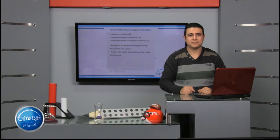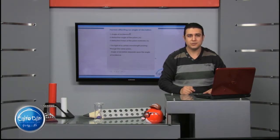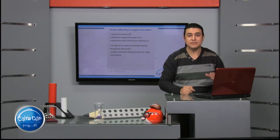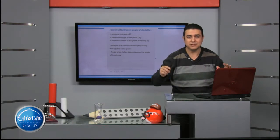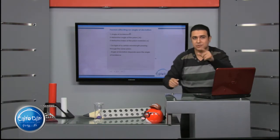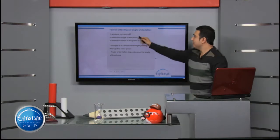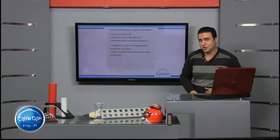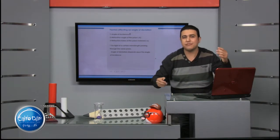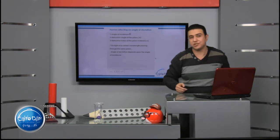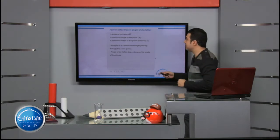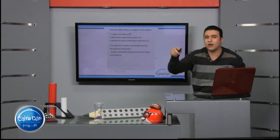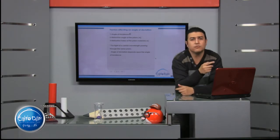Welcome in Kairudor. Today we are going to continue the main topic in chapter 3: the deviation of light in a triangular prism. Be attentive and concentrate with me. Let's start by asking: what are the factors affecting the angle of deviation?